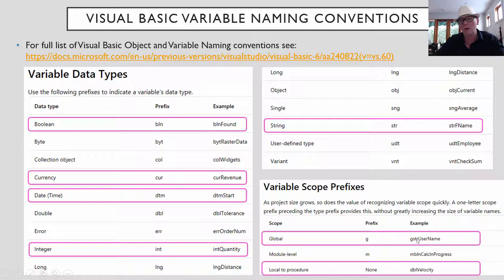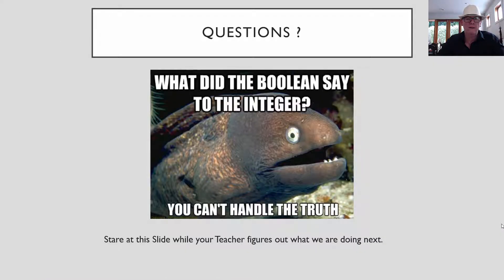But if something's a string variable, it's a username, and you've set it global so that all the procedures and all sections of the program can access that variable, well, then you are supposed to put a G in front of it as well to show that it is a global variable. Now there's a link there too, if you go to Microsoft, it's got always strict standard conventions for naming items.